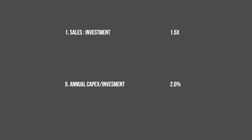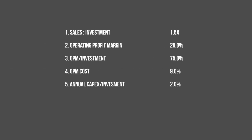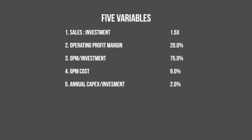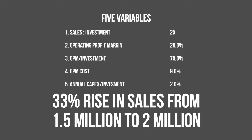In doing this, you reduce the model to just five relative variables applicable to any business, and now you can make a sensitivity table. In this example, we'll raise the sales-to-investment ratio to two to one, meaning a 33% rise in sales from one and a half million to two million, while the investment number stays flat.